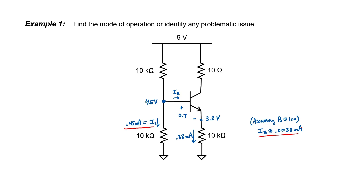Is the base current small relative to the current I1? Well, as a matter of fact, it is. And since it's so small, it's unlikely that my calculated voltage of 4.5 volts is wrong. Of course in reality, the voltage at the base is going to be slightly lower than what I've written here, but because the base current is so small, it's almost correct.